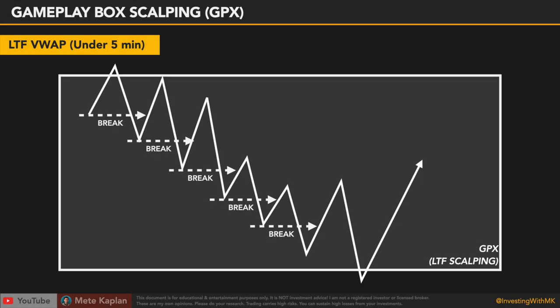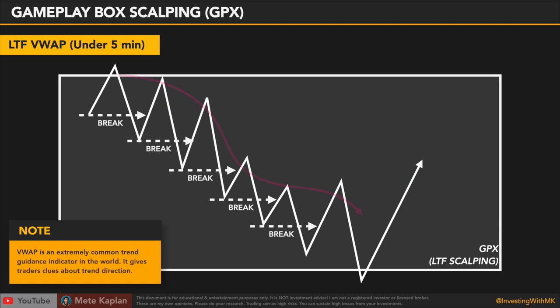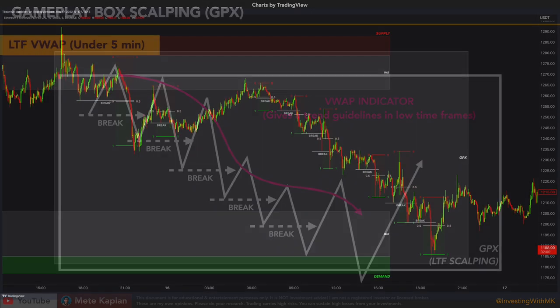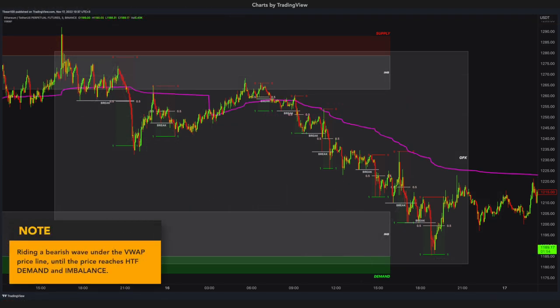One other little trick is using the VWAP indicator, which is the most common trading indicator for scalpers in the world. However, VWAP is not a buy or sell indicator — it is a simple trend guidance indicator. So as long as the price stays under VWAP, we keep looking for short positions. Price can touch or penetrate VWAP; it does not matter. You can use it until it is strongly broken. As you can see on this chart, VWAP gives us clear trend guidance — it is like riding a wave. Price rides under VWAP, protecting its bearish trend. There are many other ways to use VWAP, which I will talk about in another video.